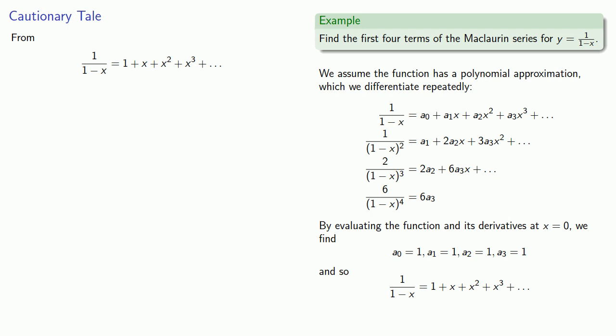So well let's let x equal 2. On the left hand side I have 1 over 1 minus 2. And on the right hand side, if x equals 2, I have 1 plus 2 plus 2 squared plus 2 cubed and so on.